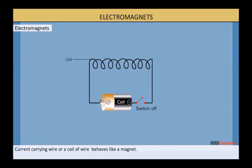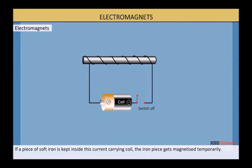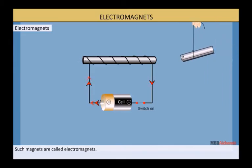Electromagnets: Current carrying wire or a coil of wire behaves like a magnet. If a permanent magnet is brought near the coil, one end of the coil gets attracted and the other end gets repelled. This shows the opposite polarity of the coil. If a piece of soft iron is kept inside this current carrying coil, the iron piece gets magnetized temporarily. Such magnets are called electromagnets.